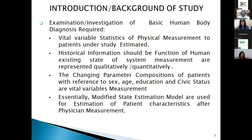Introduction and background: examinations and investigations of basic human body diagnosis require the vital variable statistics of physician measurement for patients under estimated conditions. Physiological information is also recorded as a function of the human existing state; system measurements are represented qualitatively or quantitatively to determine the existing state of every patient. Changing parameter composition of patients with reference to sex, age, education, and civil statistics are the most vital variables for measurement.